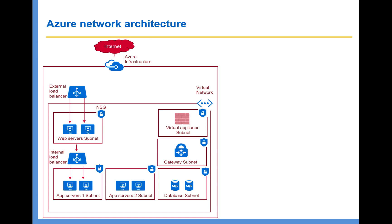In case you want more granular control on load balancing — for example, URL-specific routing — then you can have an Application Gateway in order to get Layer 7 load balancing capabilities. We have dedicated lectures on load balancing and Application Gateways where I'll explain the difference between Layer 4 and Layer 7 load balancing capabilities.